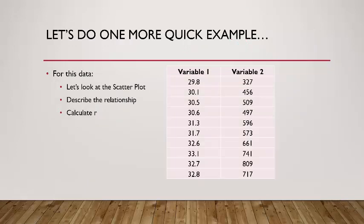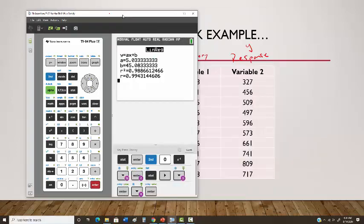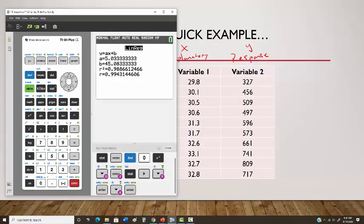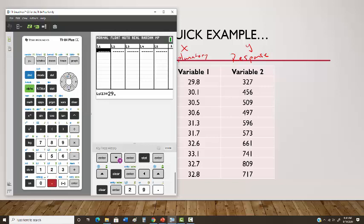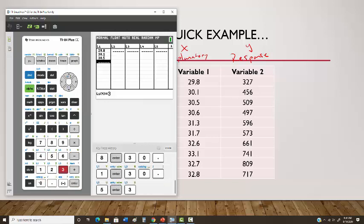Let's do another example. I have two variables — variable 1 is the explanatory X variable and variable 2 is the response Y variable. I want to look at the scatter plot, describe the relationship, and calculate R. First, take this data, go to the Stat button, Edit the list, scroll to the top, hit Clear then Enter for each list, and start entering the values.